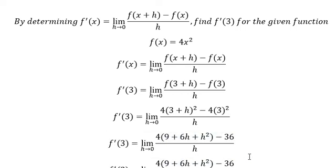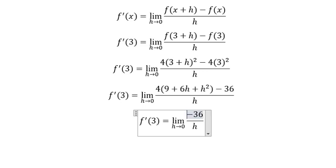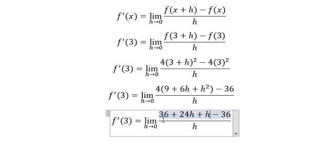Next, we need to distribute number 4: 4, 9, 6h, and h². So we have 36 plus 24h plus h².